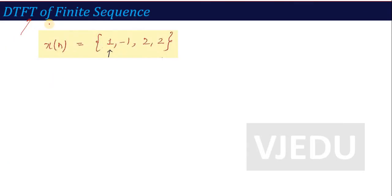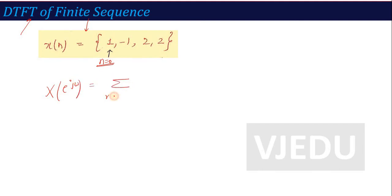The next DTFT I have calculated here is for a finite sequence. We have this signal x(n) given as a finite sequence with amplitudes 1, -1, 2, and 2, where the arrow indicates the value at n = 0. I will calculate the DTFT using the standard formula: X(e^jω) = summation from n = 0 to 3 of x(n)·e^(−jωn).